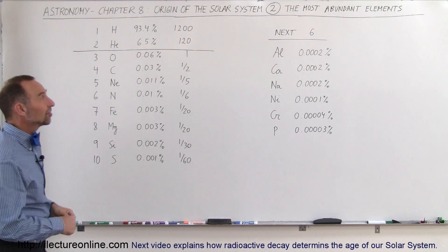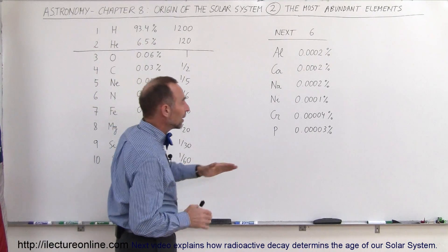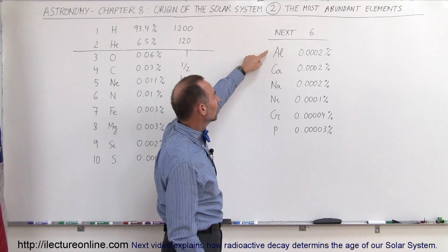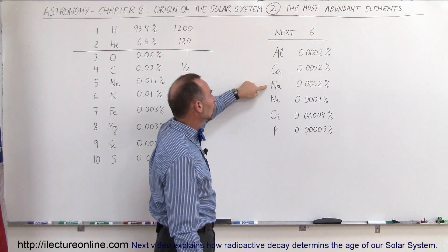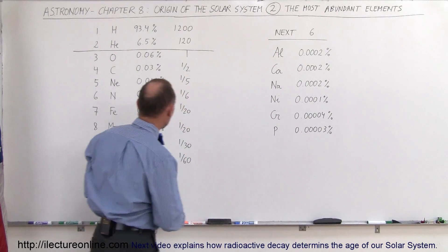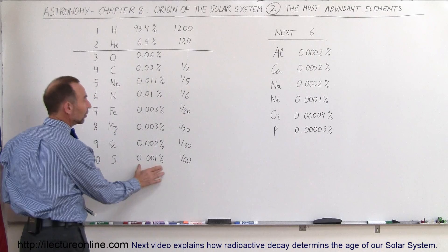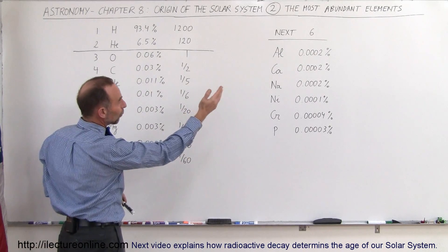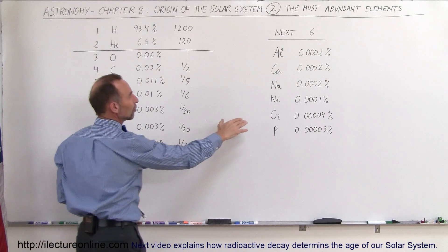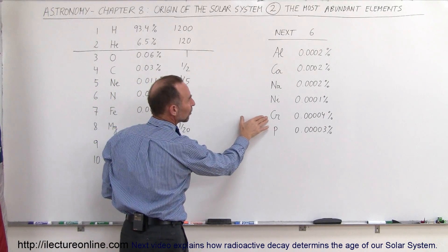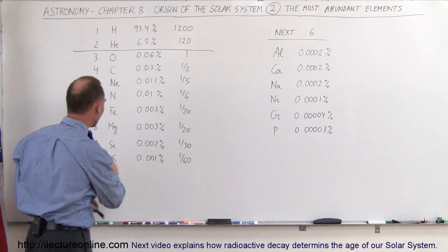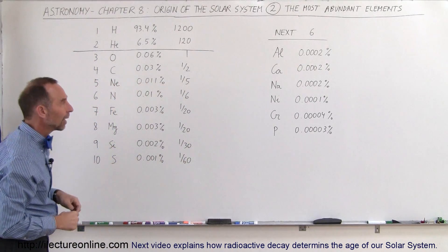Rounding off the next six — there's kind of a gap after the tenth element — you can see it's mostly metals: aluminum, calcium, sodium, nickel, chromium, and phosphorus. In relative abundance compared to sulfur, aluminum is about one-fifth as much, calcium and sodium similar, nickel is about one-tenth, chromium about one-twentieth, and phosphorus about one-thirtieth the abundance of sulfur, which is the tenth item on the list.